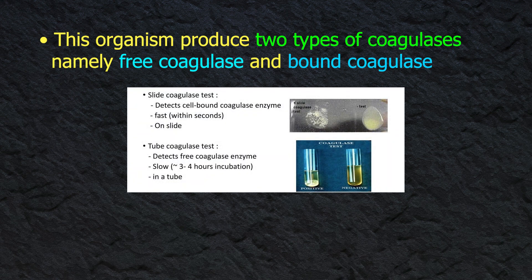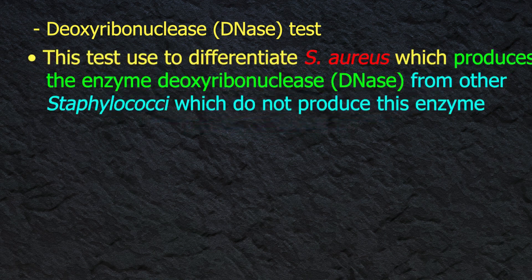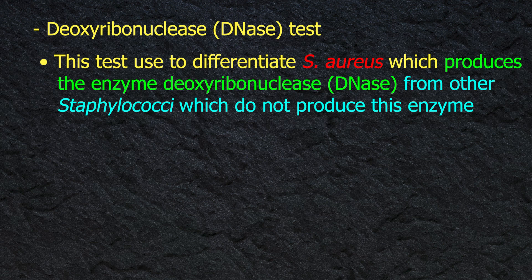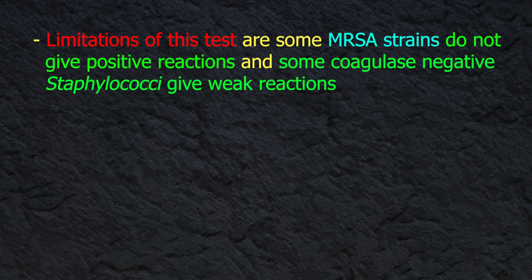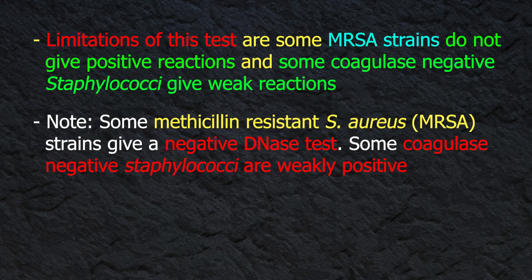The deoxyribonuclease (DNase) test is used to differentiate S. aureus, which produces the enzyme DNase, from other staphylococci which do not. It is particularly useful if plasma is not available, or when results of the coagulase test are difficult to interpret. Limitations: some MRSA strains do not give positive reactions, and some coagulase-negative staphylococci give weak reactions. Additionally, some coagulase-negative staphylococci are weakly positive, and Serratia and Moraxella species frequently give a positive DNase test.